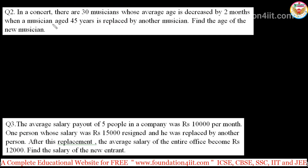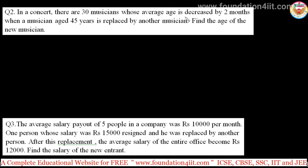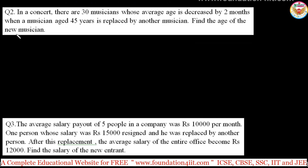The next two problems involve replacement. In a concert, there are 30 musicians whose average age is decreased by two months when a musician aged 45 years is replaced by another musician. Find the age of the new musician. The third question is similar but the average is increased by replacing one person.